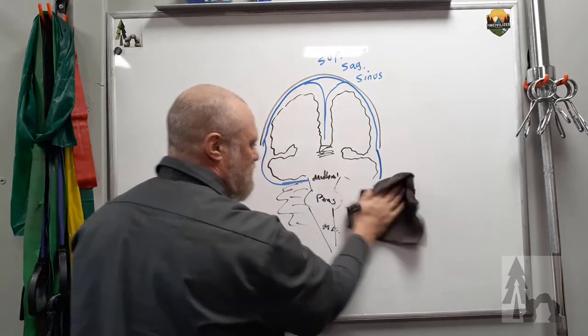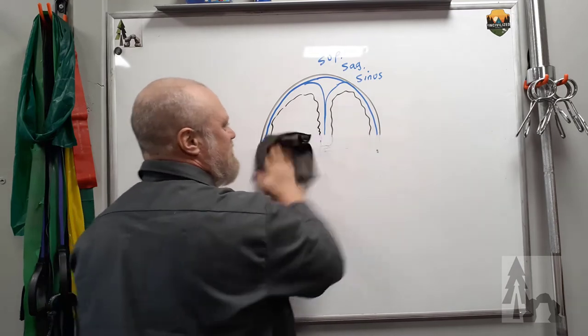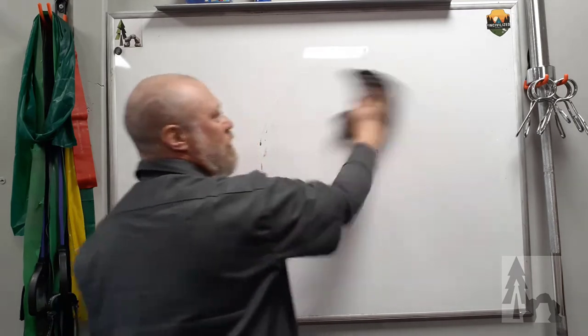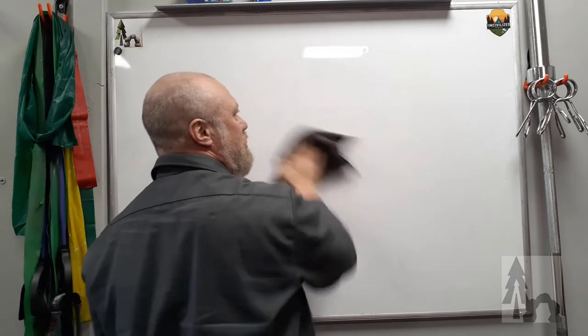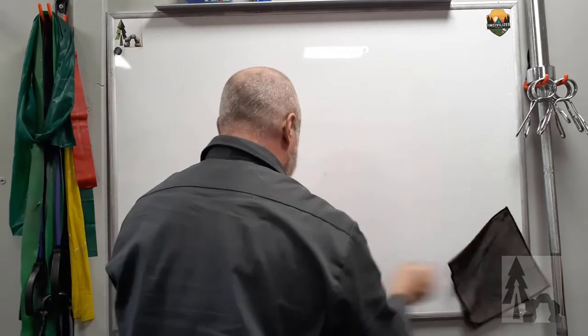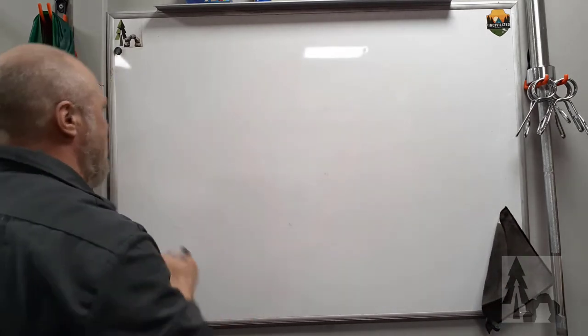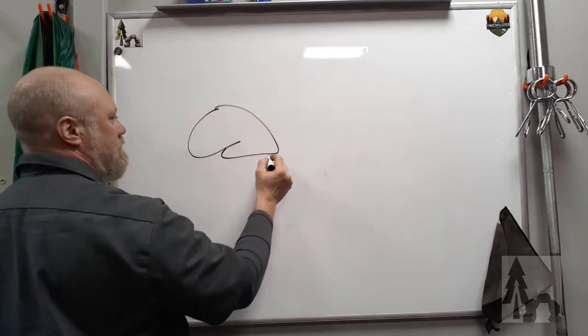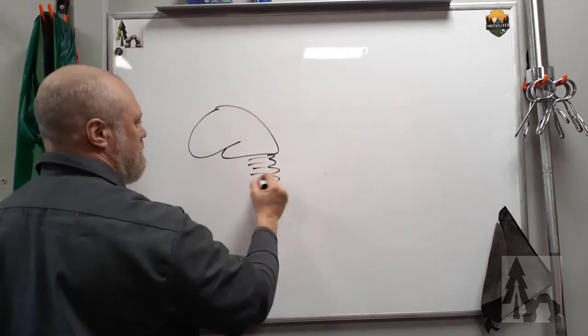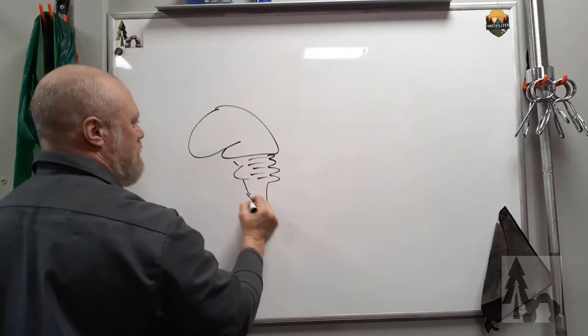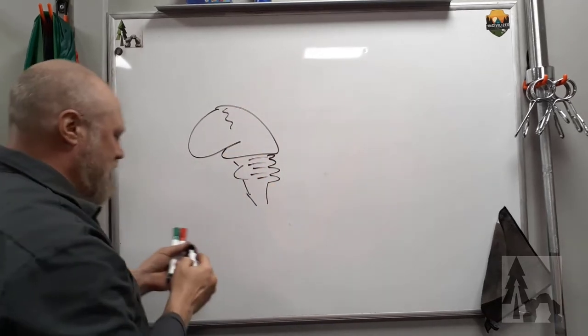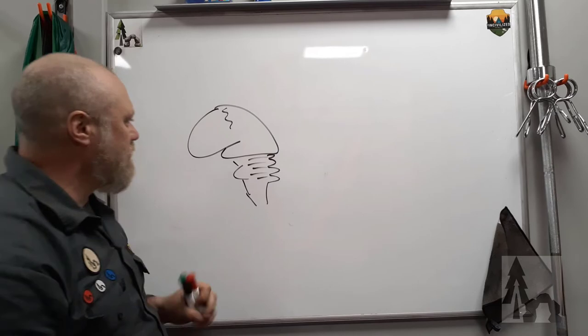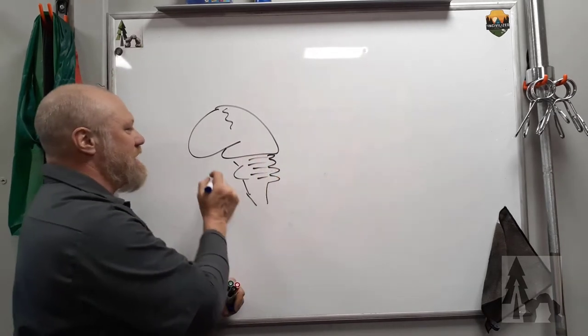I'm going to come back to that in a little bit. So now what I'm going to do is draw some of the sinuses from a lateral view. From a lateral view on the brain. I'm going to draw a brain over here. My cartoon brain. So you're going to get some venous drainage.